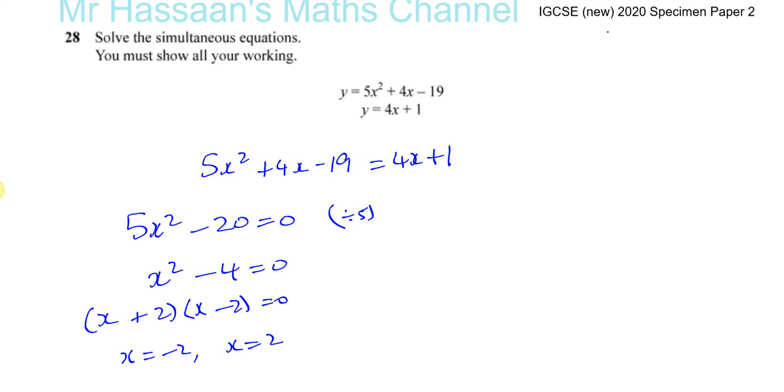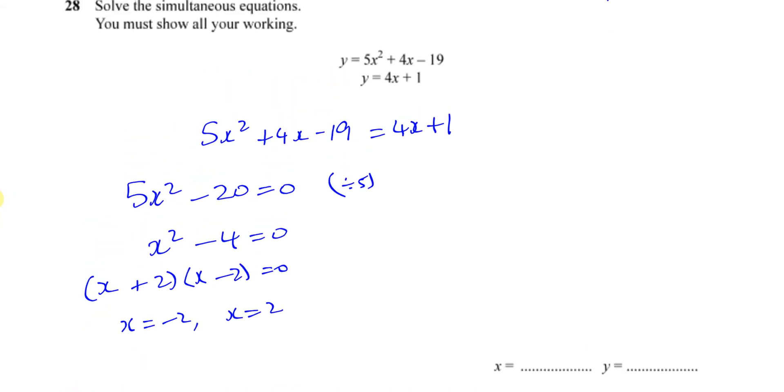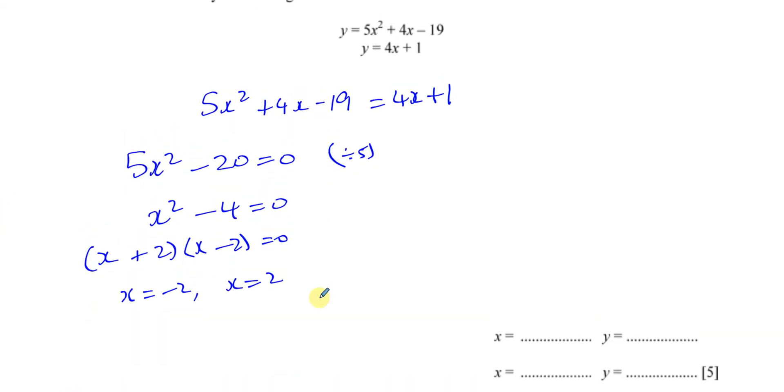Now we have to find the y values as well, so don't just stop there. Thankfully they've got the answer space so in case you forget, you're going to remember when you see this. When x equals 2, we've got to find out what y is now. We could find y by substituting x equals 2 in the first or the second equation, but of course the second equation looks much easier. So you want to make your life easy. 4 times 2 plus 1, that's 8 plus 1, which is 9. So when x equals 2, y equals 9.